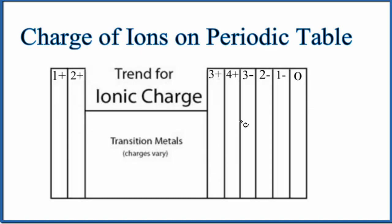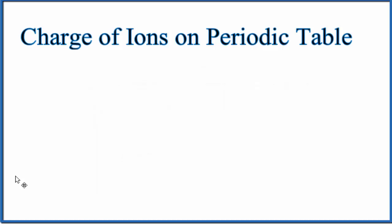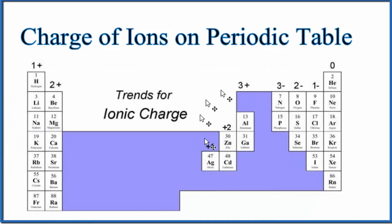These are the specific ionic charges on the periodic table that you can expect. All of these in group 1 are 1+ - they form 1+ ions. Group 2 is 2+. We skip the transition metals, and there are also a number of elements over here that have variable charges.